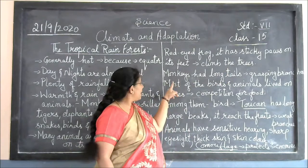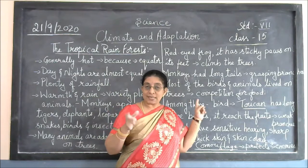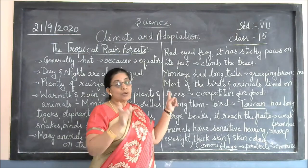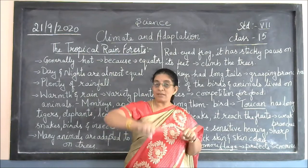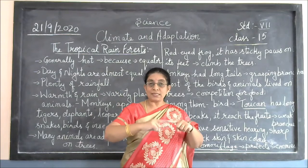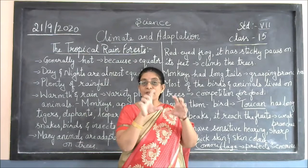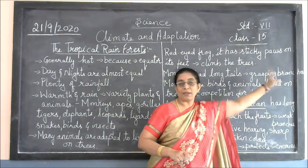Next is the monkey. The monkeys in the tropical rainforest have long tails. Why do they have long tails? Because when they jump from one branch to another, these tails help them in crossing branches. When they jump, the tail rolls around the branch, giving the monkey a grip on the branch before its hands and legs can attach. That is why they have long tails — for grasping the branches.